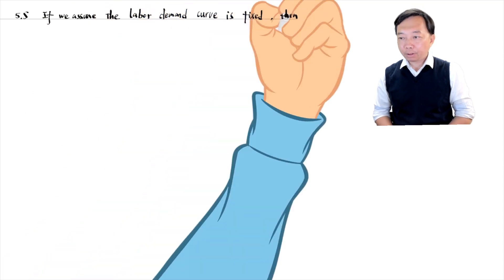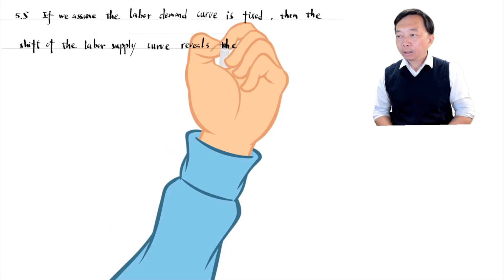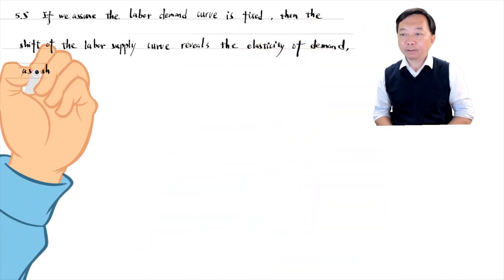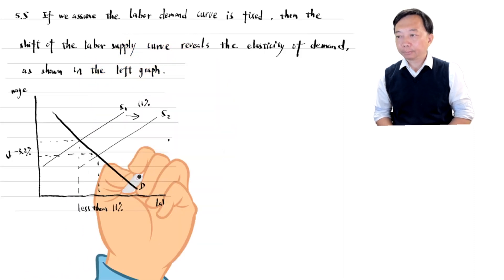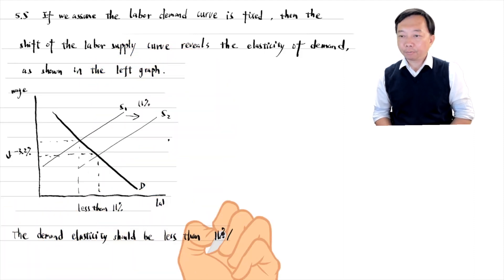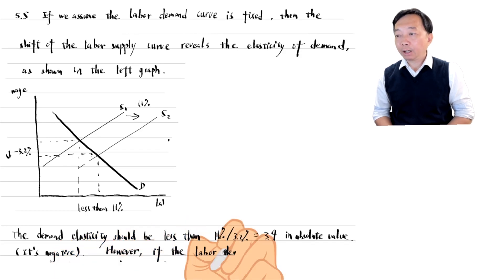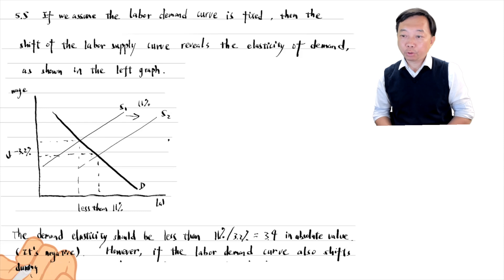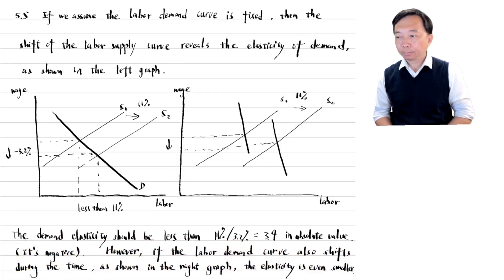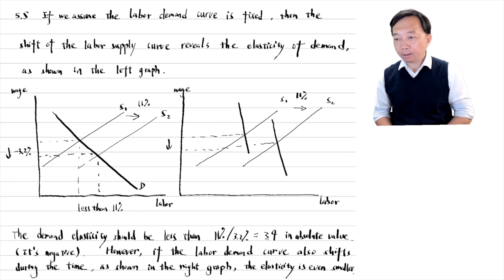Immigration is a supply shock and shifts the labour supply curve to the right. If we assume that the labour demand curve is fixed during the time studied, then the shift of the labour supply curve reveals the elasticity of demand as shown in the left graph. The demand elasticity is negative and should be less than 3.4 in absolute value. However, if the labour demand curve also shifts during that time, as shown in the right graph, the demand elasticity is even smaller in absolute value. We cannot make any inferences about the elasticity of supply in this case.